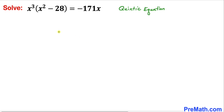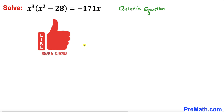Welcome to pre-math. In this video we are going to solve this given quintic equation x³(x² - 28) equals negative 171x.